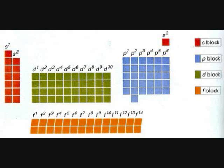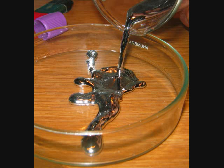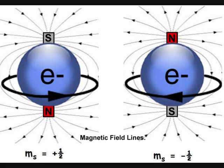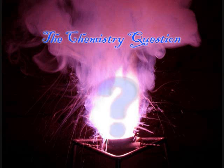So why is mercury a liquid? It is a liquid because it does not like to share electrons, thus reducing the intermolecular forces that would hold it together as a solid. Thank you for watching the Chemistry Question. Be sure to subscribe and leave any questions and suggestions in the comments below. Until next time.